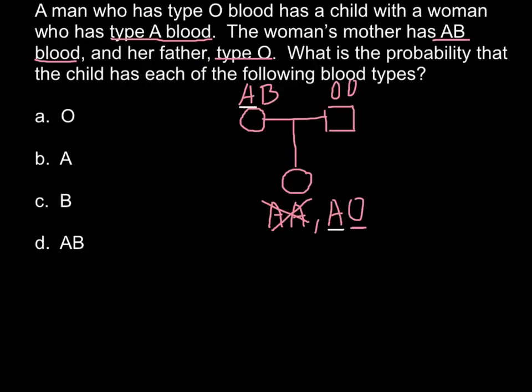Because as long as we know that this female belongs to the blood group A and her genotype AO, we can easily solve this problem. So, we know that female is AO genotype. So, this is female. And male, her husband, belongs to the blood group O. So, his genotype is OO.